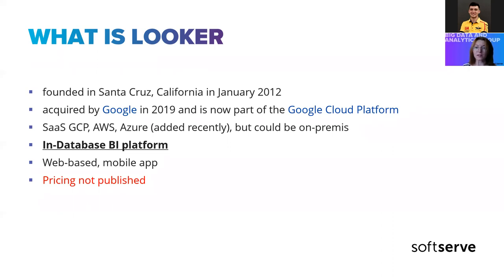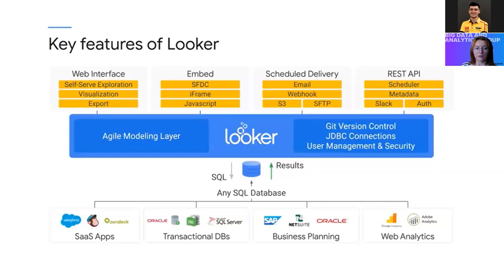Pricing depends on the number of users you will have on your platform and the types of licenses those users will need. They have three types of licenses: basic user, analyst, and developer. The developer license includes development and administration. Most importantly, since Looker is fully in-database, each Looker project works with one database connection.